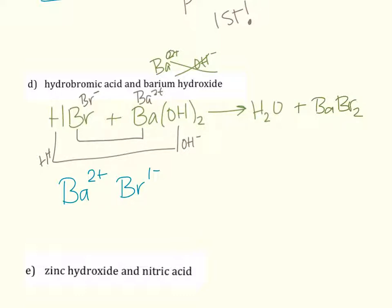And so to balance it, I'm going to start with anything other than hydrogen and oxygen. So we've got two bromines right here. So I need two HBr's. And then I notice that I've got one barium here, one barium here, so that's good. Now I can balance my hydrogen and oxygen. Now acid base reactions are a little bit easier, I think, because I've got two hydrogens right here.